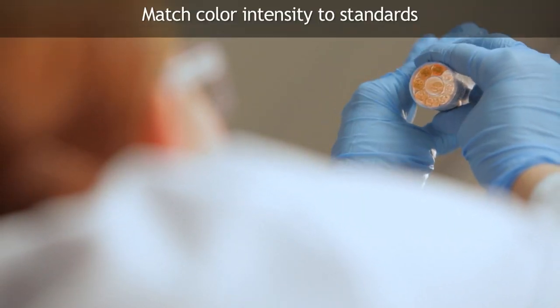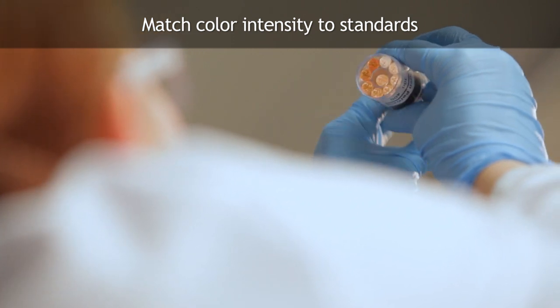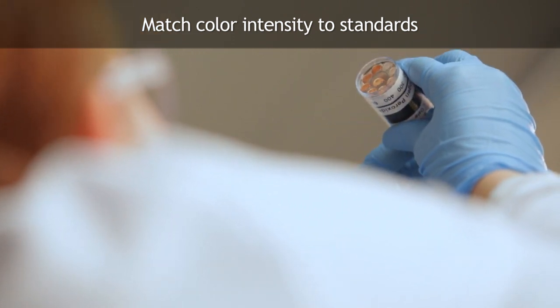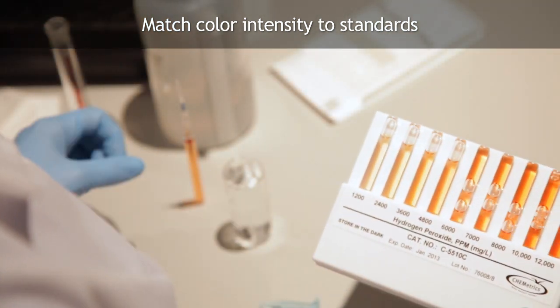Direct the top of the comparator up toward a source of light while viewing from the bottom. Rotate the comparator until the color standard below the ampule shows the closest match. Concentration values are printed along the bottom edge of the comparator label.